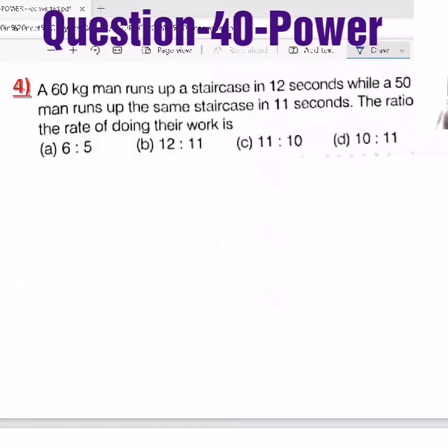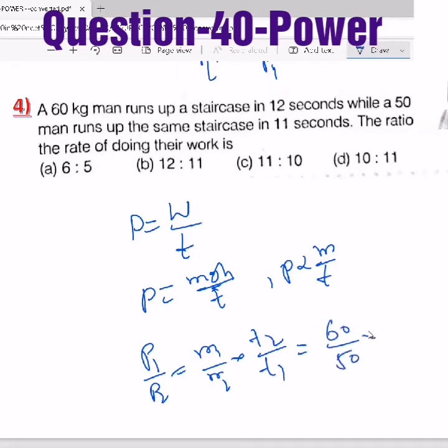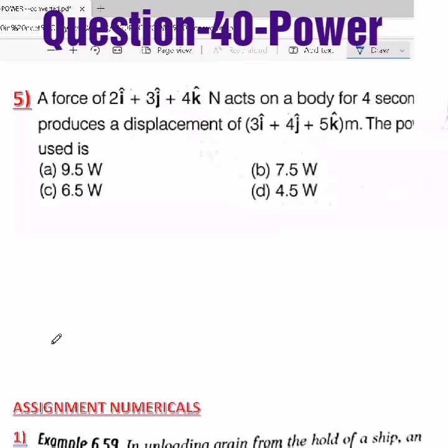Another question: a 60 kg man runs up a staircase in 12 seconds while a 50 kg man runs up the same staircase in 11 seconds. The ratio of the rate of doing their work—nothing but power—power equals work by time. Work equals mgh by time. Here m is different, t is different, height same, g same. So power is proportional to m/t. Now P₁/P₂ = (m₁/m₂) × (t₂/t₁) = 60/50 × 11/12, so 11/10 is the answer.